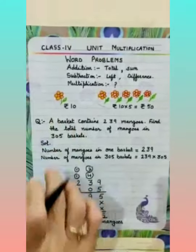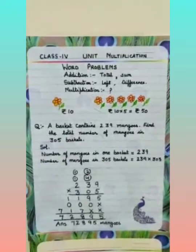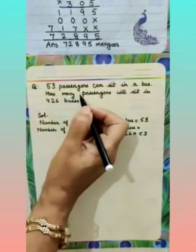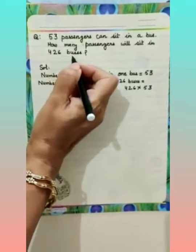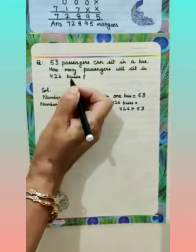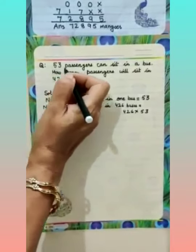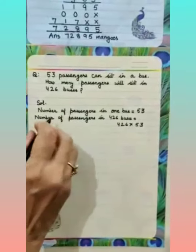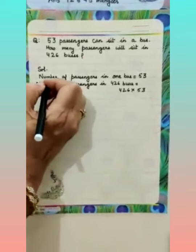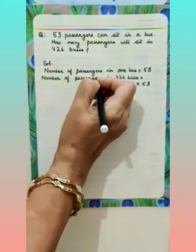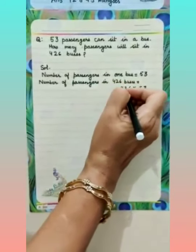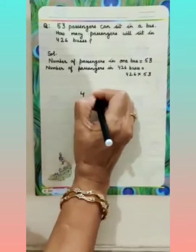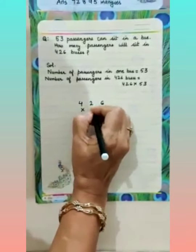These problem sums are based on our daily life. Now see the next sum. 53 passengers can sit in a bus. How many passengers will sit in 426 buses? You all come by bus — in one bus 53 children are sitting, and in 426 buses, how many children will be sitting? Write the statement: number of passengers in 1 bus is 53, number of passengers in 426 buses is 426 multiplied by 53.